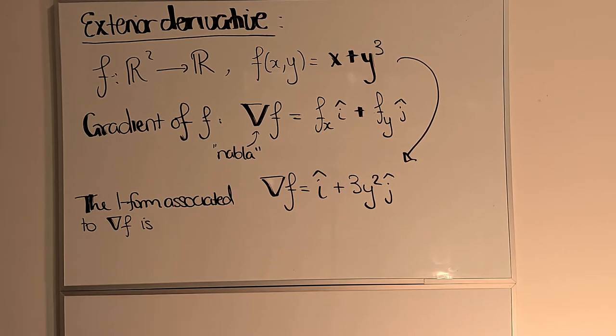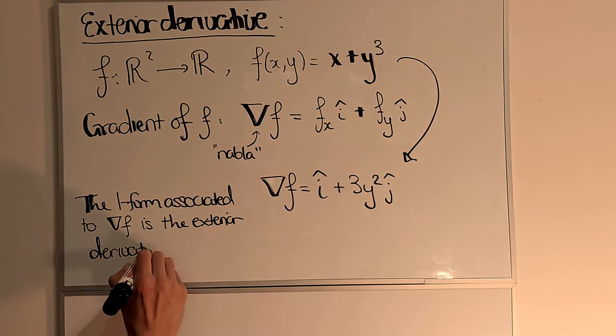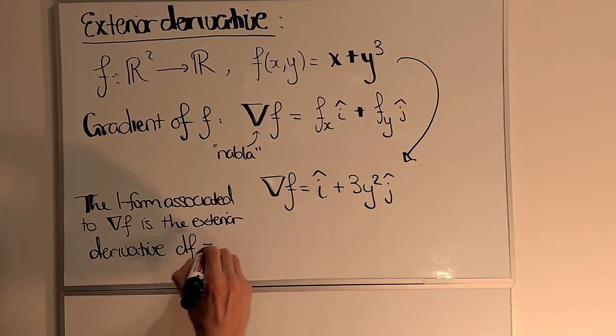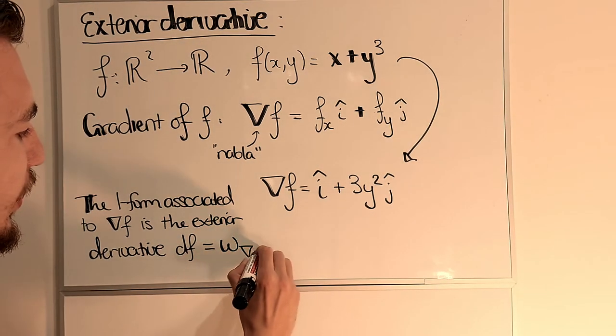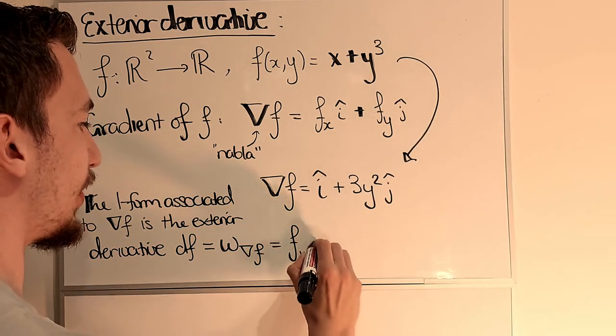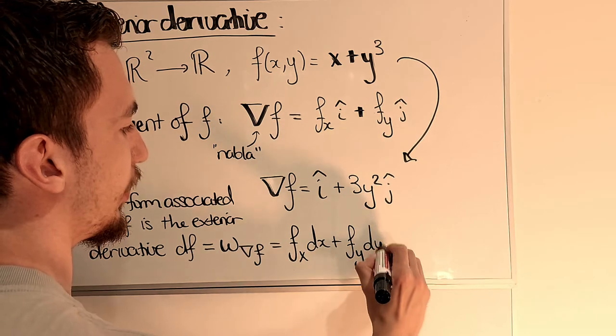is what we call the exterior derivative. So we often write the exterior derivative as just df, and in my previous notation, that's just ω∇f. So if I was to write this a little more explicitly, in this case, it's fx dx + fy dy.